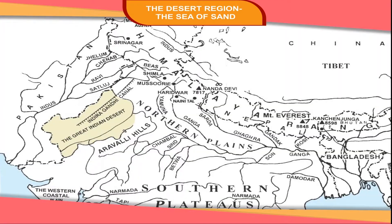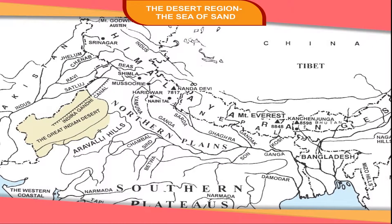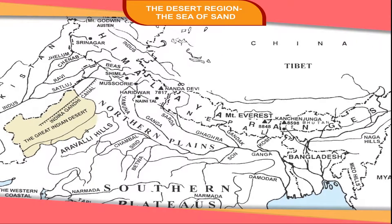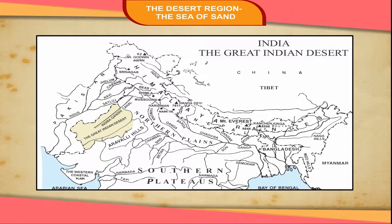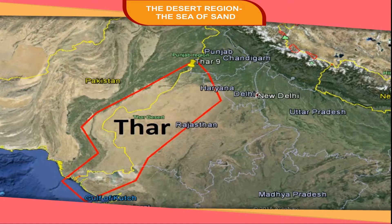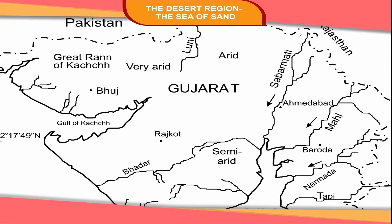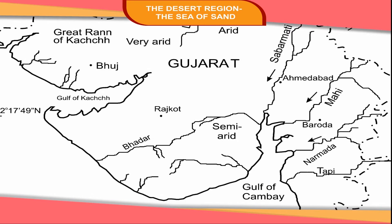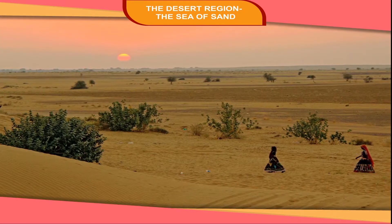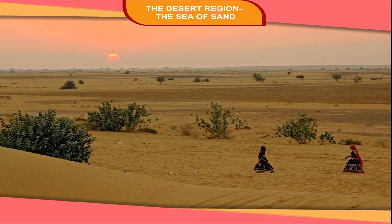The Sea of Sand. The Aravili Hills divide Rajasthan into two parts. The western part of the state remains dry throughout the year. This part is known as the Great Indian Desert or the Thar Desert. The Thar Desert touches the border of Pakistan in the west. It extends from the Rann of Kutch in Gujarat beyond the Luni River northward. The desert is about 500 km long and 100-300 km wide.